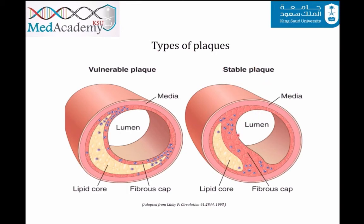There are two types of plaques: stable and vulnerable. Stable plaques have densely collagenized and thickened fibrous caps with minimal inflammation and negligible underlying atheromatous core. Vulnerable plaques have thin fibrous caps, large lipid cores, and increased inflammation. In general, plaque inflammation increases collagen degradation and reduces collagen synthesis, thereby destabilizing the mechanical integrity of the cap.